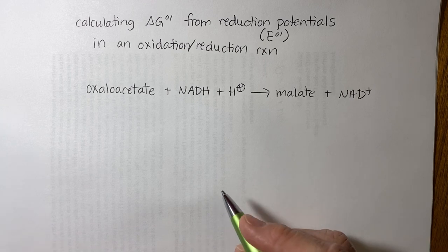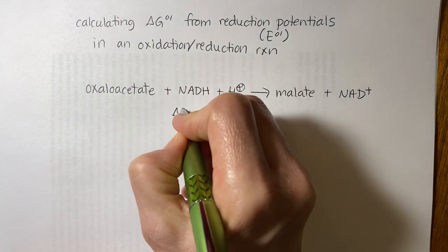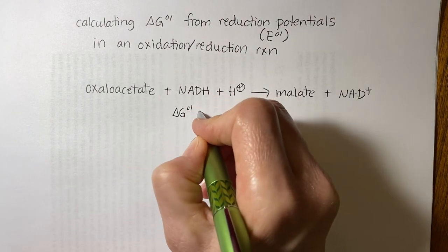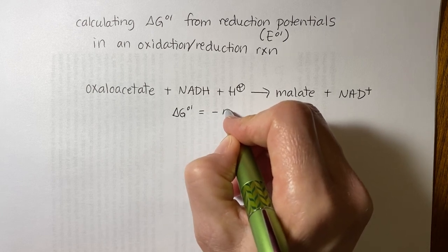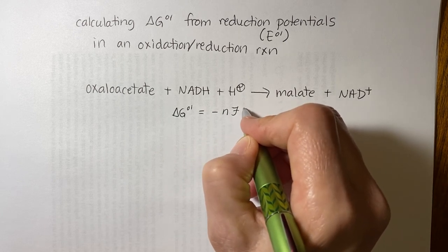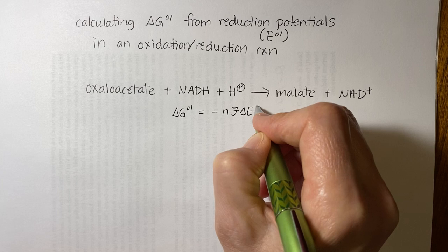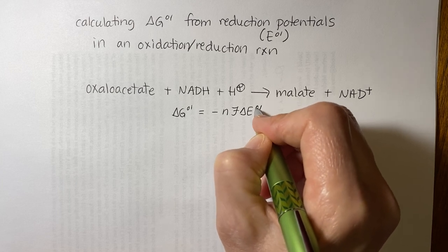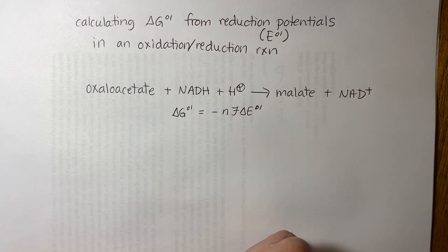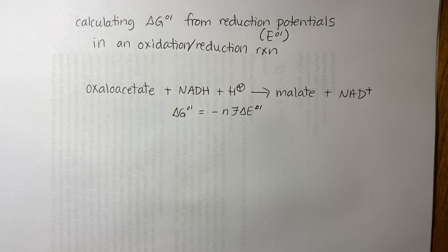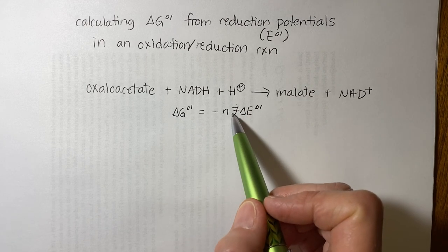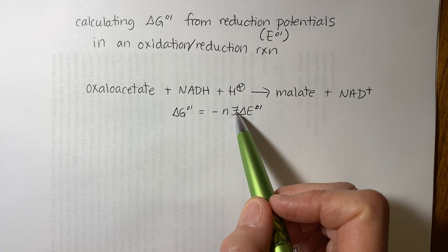So the equation we use is the standard reduction potential related to delta G. Looks like that. It's a modified Nernst equation, if you remember that. So we know this. This is a constant. It's the Faraday constant.